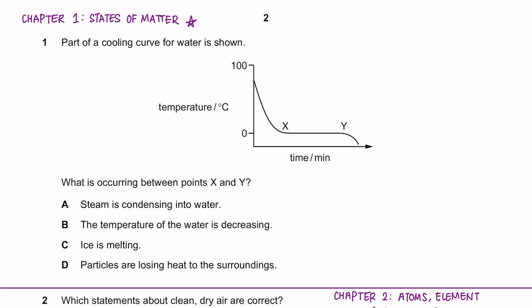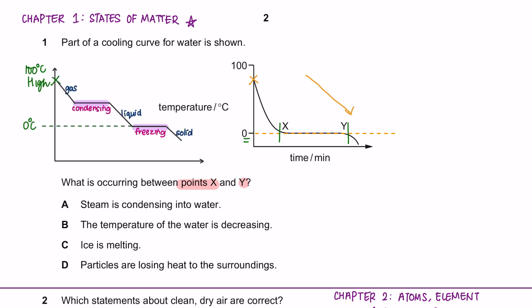Question 1 is from Chapter 1. Part of a cooling curve for water is shown. We can see here that it starts at a high temperature and then it reduces down until below zero. What is occurring between point X and Y? From here until here, we can see that the temperature is constant. If you see a graph with temperature reducing, it means that it's a cooling graph.